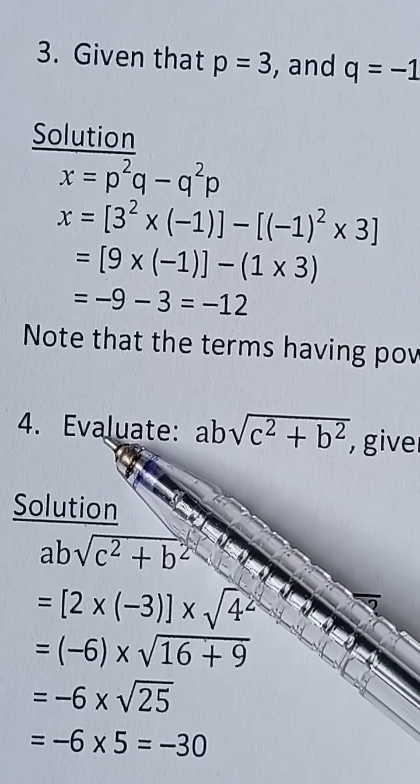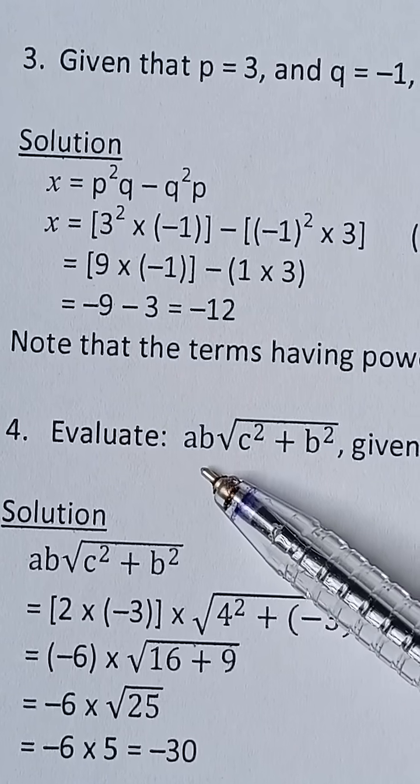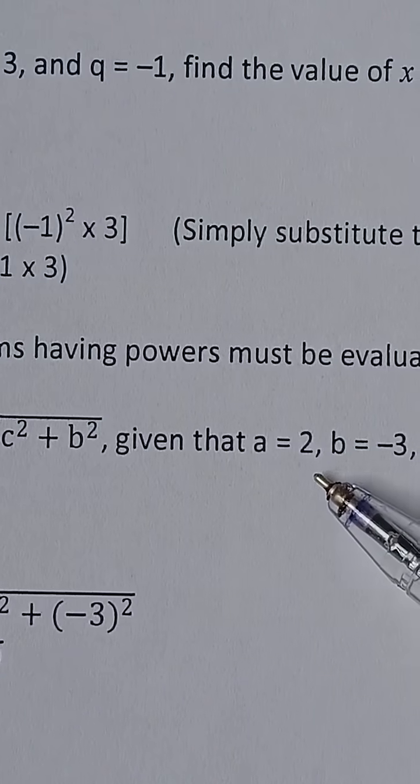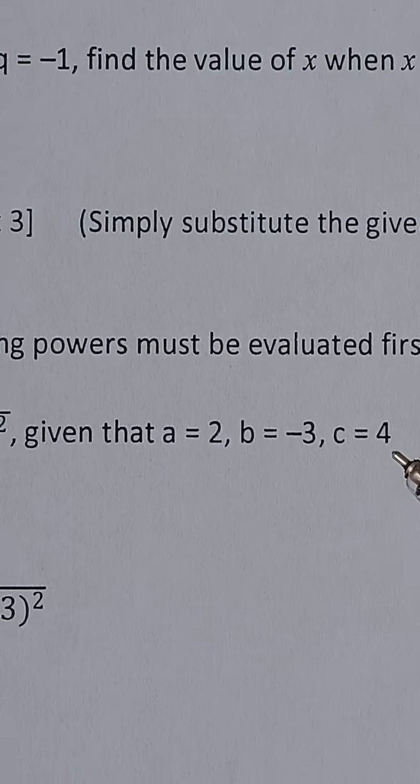And then we have another example here that says we should evaluate ab square root of c squared plus b squared, given that a equals 2, b equals negative 3, and c equals 4.